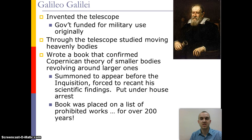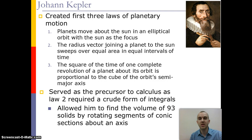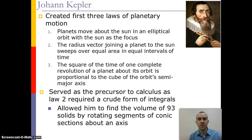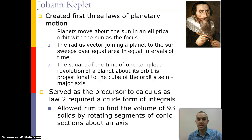His concepts helped push forward many other famous scientists and mathematicians, such as Johann Kepler, who continued to study the planets and created the first three planetary laws of motion: one, that planets move around the sun in elliptical orbits; two, that the radius vector joining a planet to the sun sweeps equal areas in equal intervals of time; and three, that the square of the time of one complete revolution is proportional to the cube of the orbit's semi-major axis. Some of Kepler's concepts served as a precursor to calculus, because his second law required a form of basic integrals, though he used approximations to help with that.